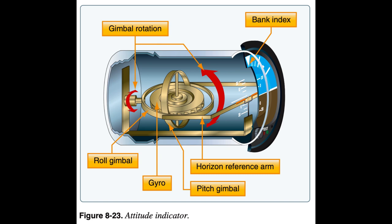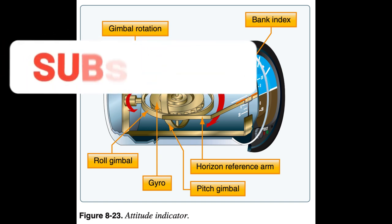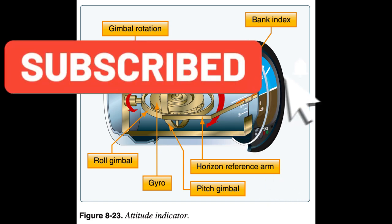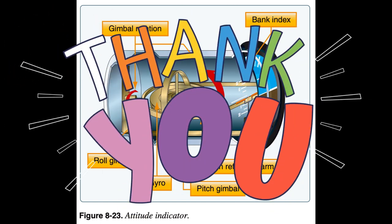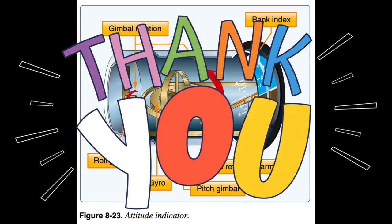An adjustment knob is provided with which the pilot may move the miniature aircraft up or down to align the miniature aircraft with the horizon bar to suit the pilot's line of vision. Normally, the miniature aircraft is adjusted so that the wings overlap the horizon bar when the aircraft is in straight-and-level cruising flight. The pitch and bank limits depend upon the make and model of the instrument. Limits in the banking plane are usually from 100 to 110 degrees, and the pitch limits are usually from 60 to 70 degrees. If either limit is exceeded, the instrument will tumble or spill and will give incorrect indications until realigned.